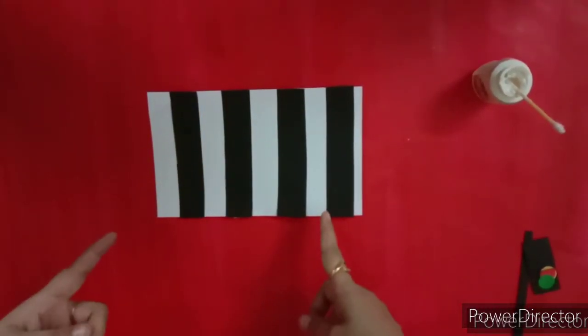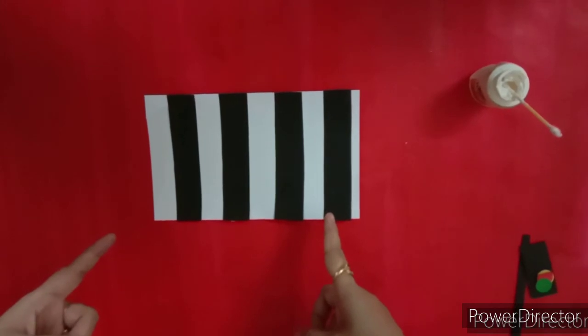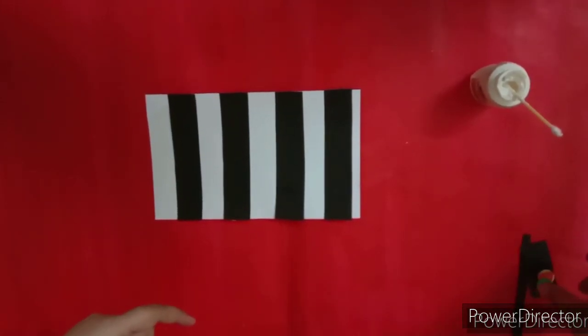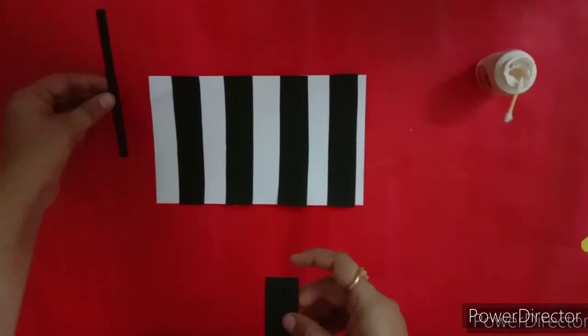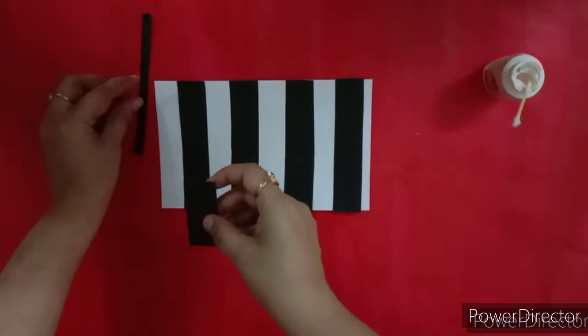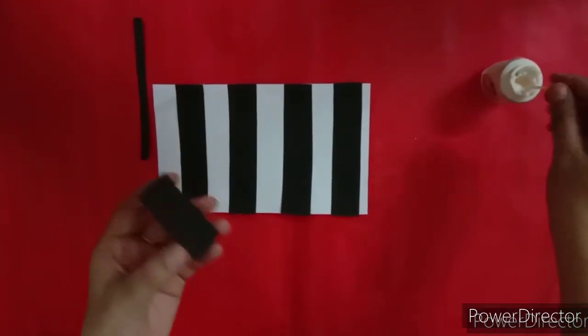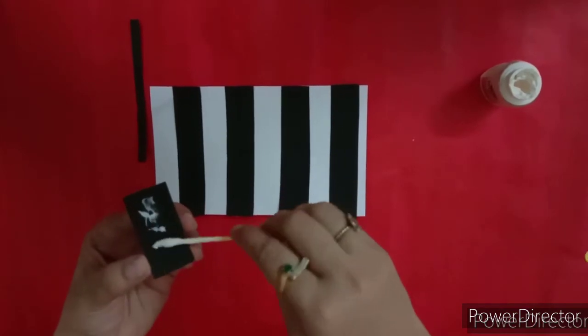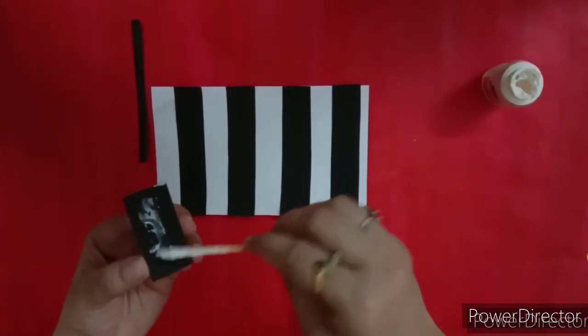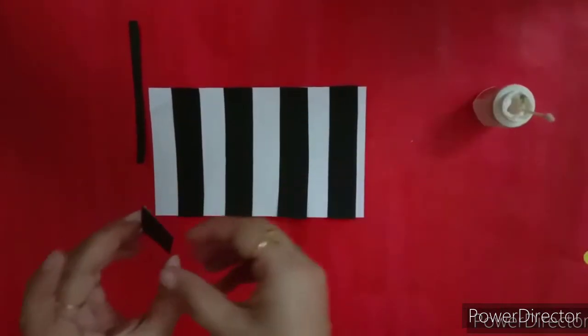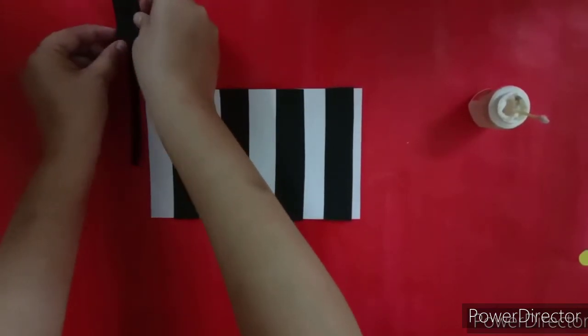See, what is this? Isn't it looking like a zebra crossing? Now, let's make a traffic signal. Okay. For that, we need one black strip like this and one piece of black paper like this. And we'll stick them together.